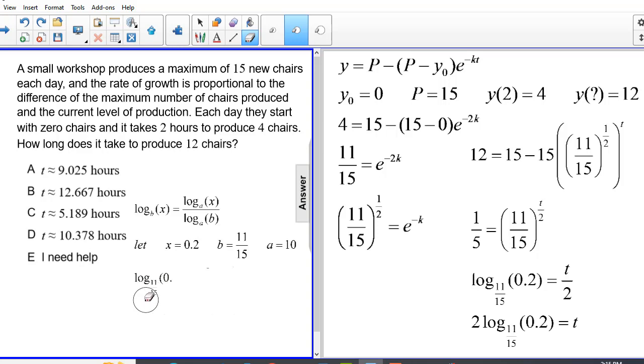So making our substitutions, we have the log base 11 15ths of 0.2 is equal to log base 10 of 0.2 over log base 10 of 11 15ths, which is equal to 5.189.